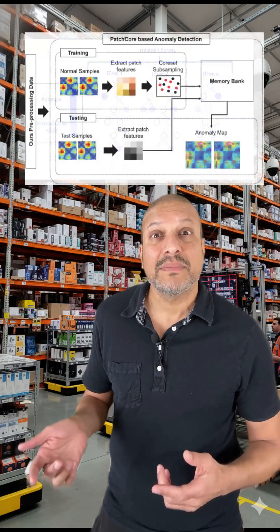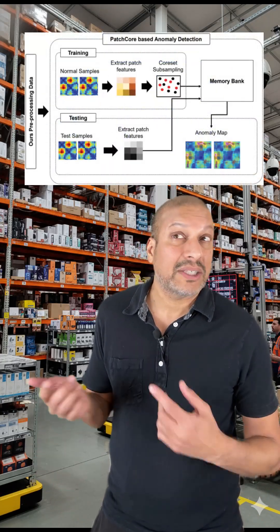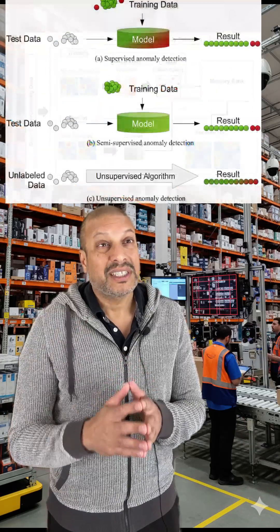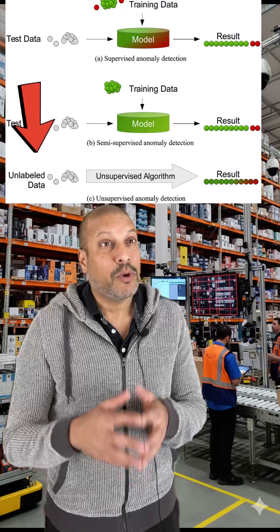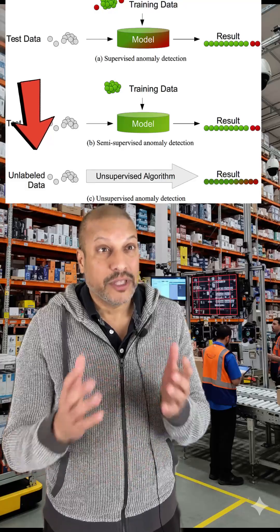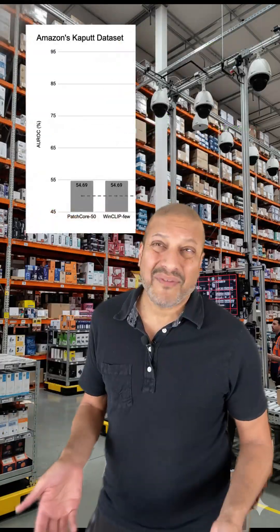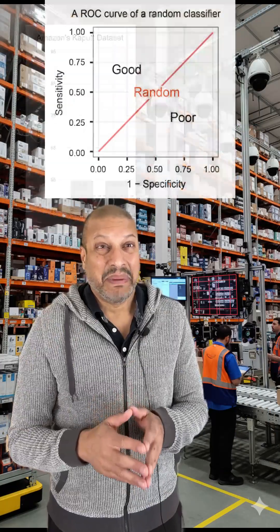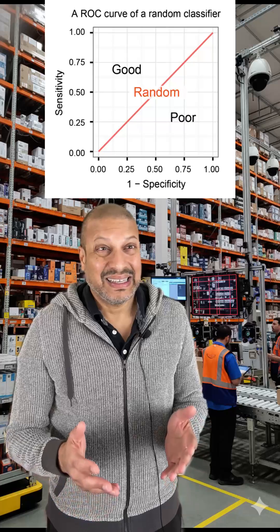I did find some newer ones like Patchcore 50 — solid choices. But when I operated them fully unsupervised, not even .55 AUC. Yikes — basically guessing.